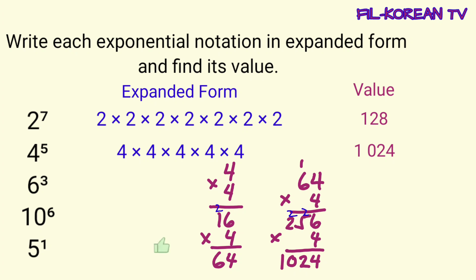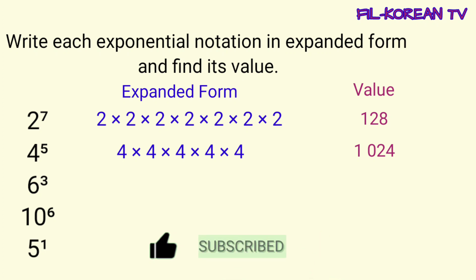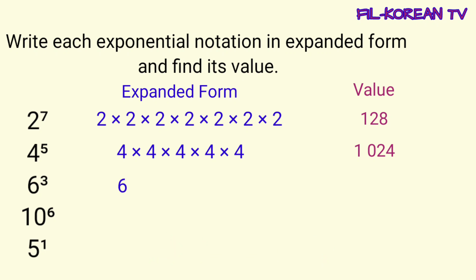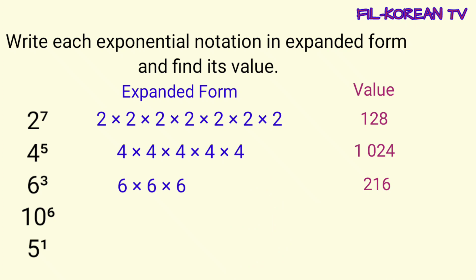So, ang value ng 4 to the 5th power ay 1024. Next, 6 to the 3rd power. Ang expanded form ay 6 times 6 times 6. At kapag imultiply natin ang 6 times 6 times 6, ang answer ay 216. Ito na yung value ng 6 to the 3rd power.